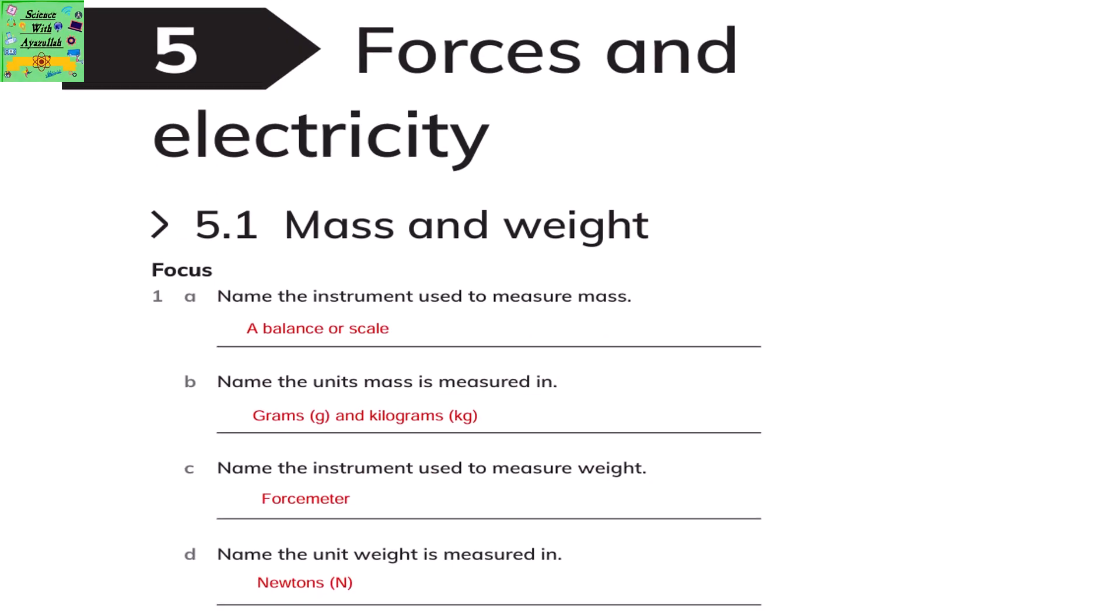Mass and weight. Name the instrument used to measure mass. It's a balance or scale. Name the units mass is measured in. Grams or kilograms. Name the instrument used to measure weight. It's a force meter. Name the unit weight is measured in. Newtons.